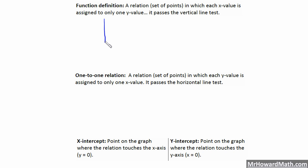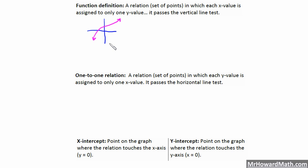For example, if we add a coordinate plane and drew a graph that looks like this, this would be considered a function because it passes the vertical line test everywhere — it never fails the vertical line test. If it fails the vertical line test, that means there is more than one y value assigned for each x value.